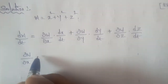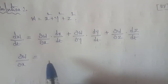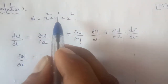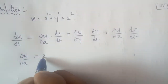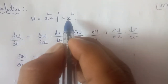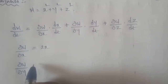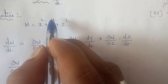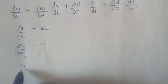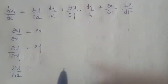For partial derivatives: ∂w/∂x = 2x (differentiating x², the y² and z² terms become 0). Similarly, ∂w/∂y = 2y, and ∂w/∂z = 2z.